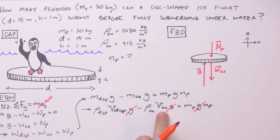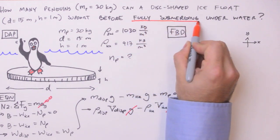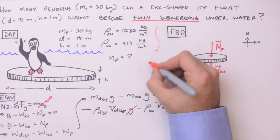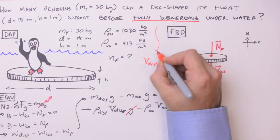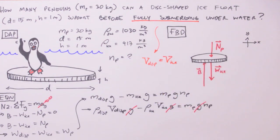Well remember that we said we're going to have just the right amount of penguin to fully submerge our ice float. And that means that the volume of the displaced fluid is going to be equal to the volume of the ice. In other words, every cubic centimeter of ice is displacing a cubic centimeter of water.